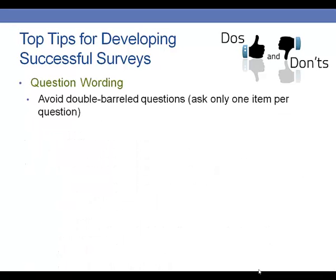Regarding question wording: avoid using double-barreled questions, which ask two things in the same question. For example, if you wanted to know how much your program helped students improve their confidence and their skills related to highway driving, you wouldn't want to ask, 'How much did this program help you improve your confidence and skills related to highway driving?' — because your program may have been successful in improving confidence but less so in improving skills. By combining them, you might confuse participants and miss important data. Instead, split this into two separate questions.